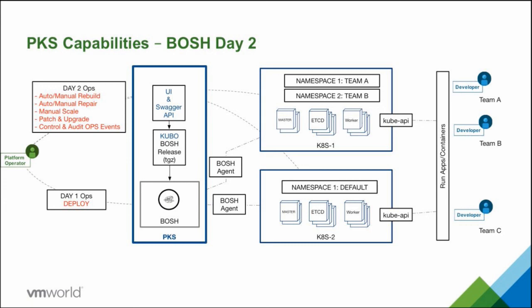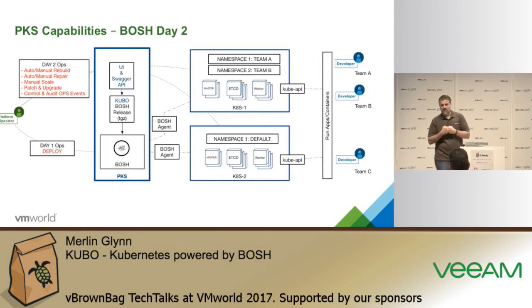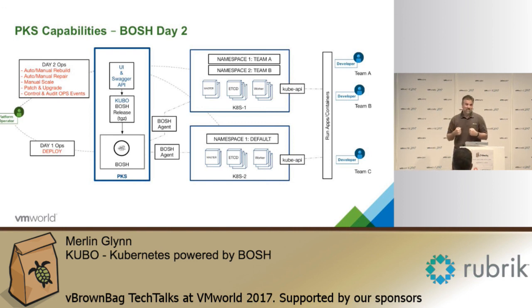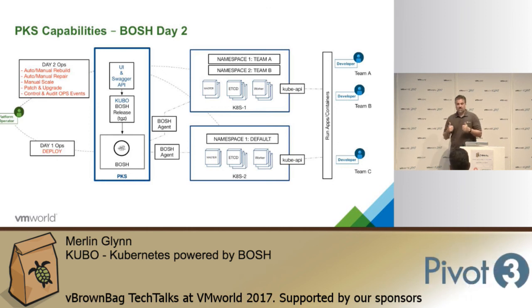BOSH and Kubo are open source components and key pieces of PKS, and they're really great for the operator to do this at scale — allowing you to have hundreds of clusters, keep them healthy, keep them alive, audit who's doing what, and make sure developers have an API they can always push their apps to. An operator just wants developers to be able to get everything they need reliably, quickly, and agile, and keep it up and running. BOSH helps us do that, and BOSH is a key technology in PKS.